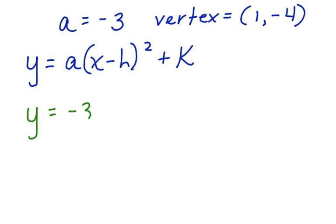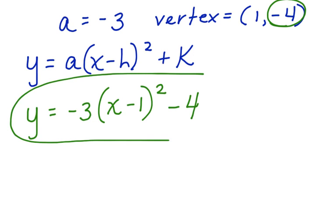y equals negative 3 times x minus 1 squared. And because this is a negative 4, we're going to add that here. Here's the vertex form for this parabola and our work is complete.